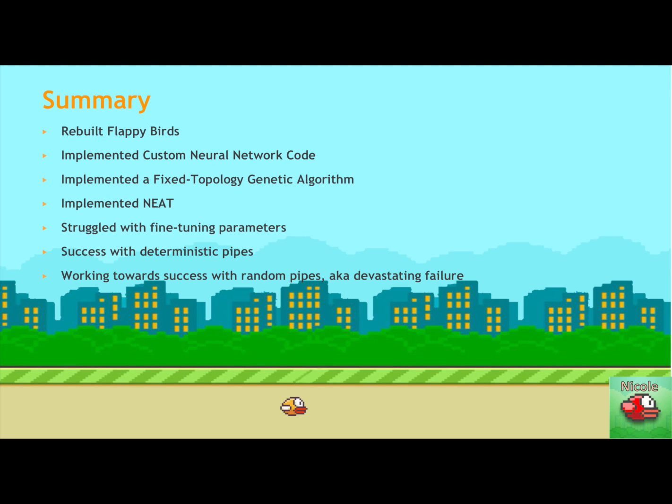So in summary for this project, we rebuilt Flappy Bird in Python, we implemented a custom neural network, we implemented a fixed topology genetic algorithm, and then we implemented NEAT to compare it to that. We struggled fine-tuning our parameters, and we did have success with deterministic pipes, just like the developer of Mario. So again, we showed that NEAT is able to solve a deterministic system, and we were able to achieve some success with random pipes, which means that NEAT is possibly able to solve random systems by using a slightly randomized genetic algorithm.